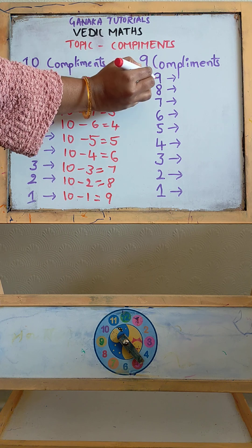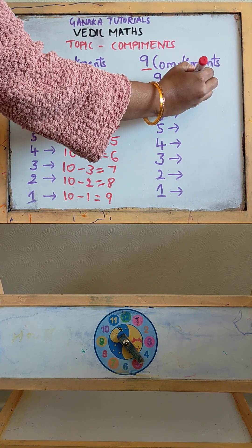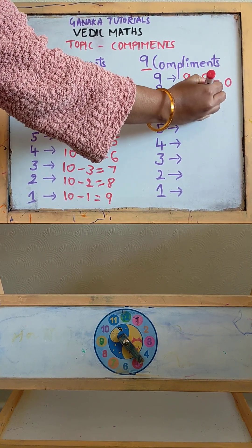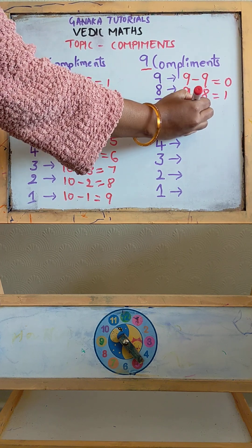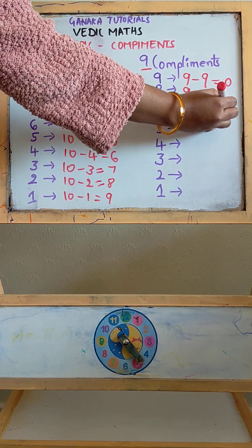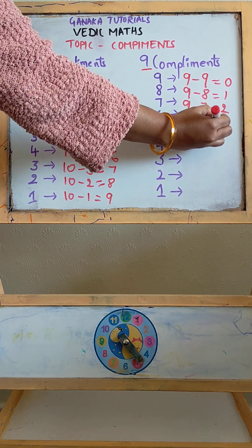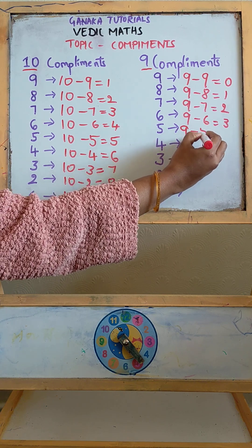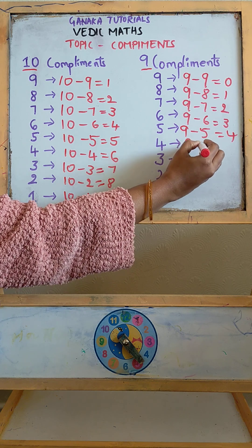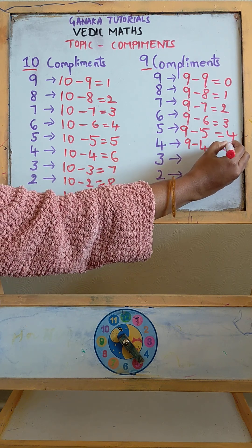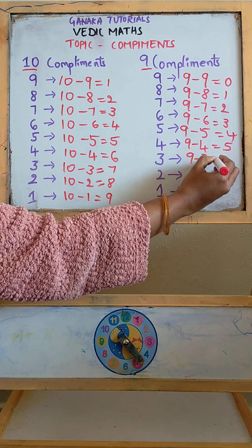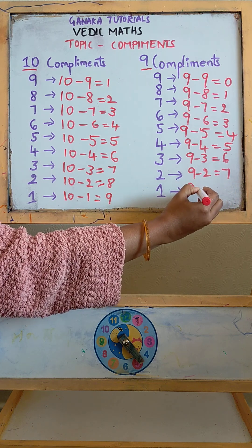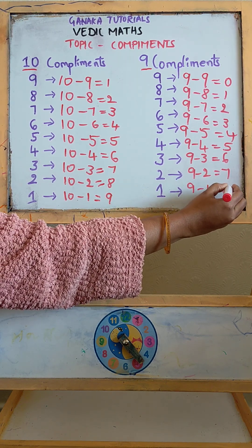For base 9: 9 minus 9 is equal to 0. 9 minus 8 is equal to 1. 9 minus 7 is equal to 2. 9 minus 6 is equal to 3. 9 minus 5 is equal to 4. 9 minus 4 is equal to 5. 9 minus 3 is equal to 6. 9 minus 2 is equal to 7. 9 minus 1 is equal to 8.